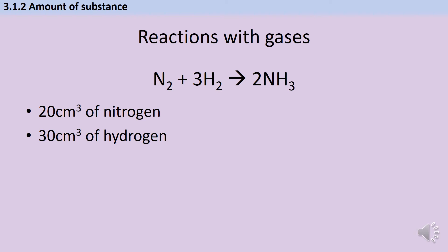Using the volumes from the question together with the coefficients from the equation, I can work out the maximum volume each reactant could react with in an ideal world, and therefore determine which is limiting — without working out moles at all. For nitrogen reacting in a 1:3 ratio with hydrogen, for every 1 mole of nitrogen I need 3 moles of hydrogen, and because they're gases that's also true of the volumes.